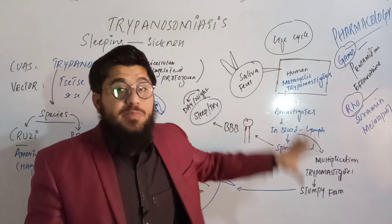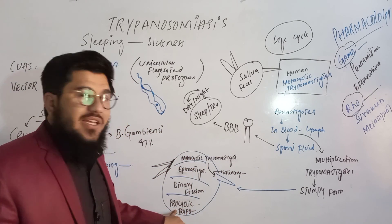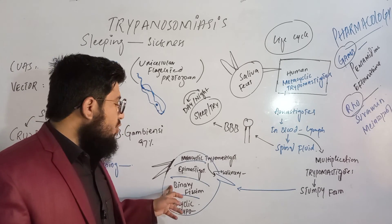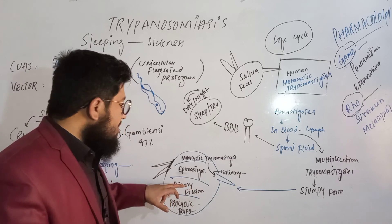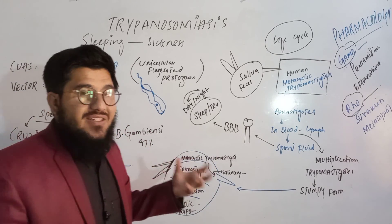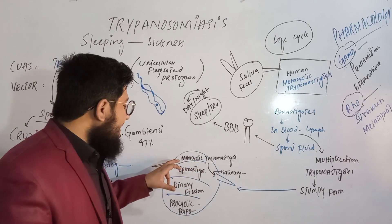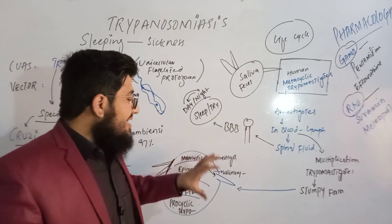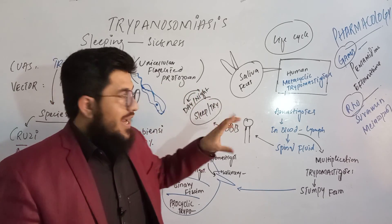If the tsetse fly again bites an infected person, it will suck the stumpy-form trypomastigotes. Once sucked into the fly, they are named procyclic trypomastigotes. These undergo binary fission, divide into two, grow, and become epimastigotes. The epimastigotes develop flagella and adhere to the salivary gland, at which stage they are named metacyclic trypomastigotes — now ready to be injected into a new human host.